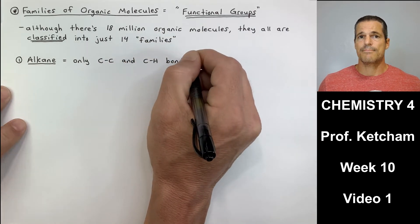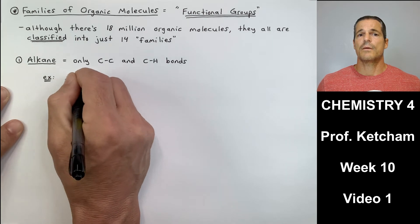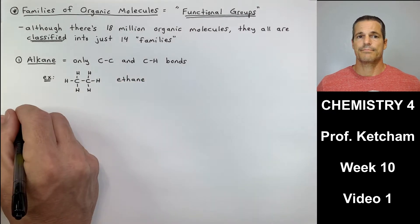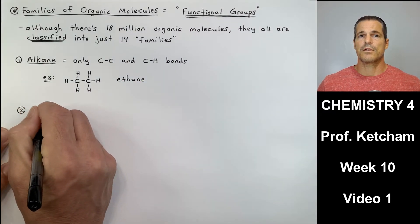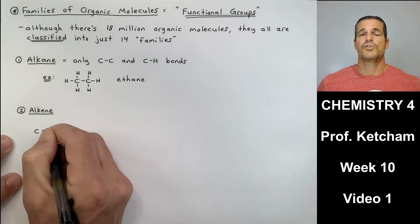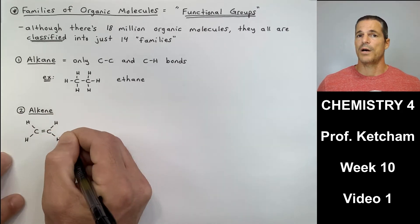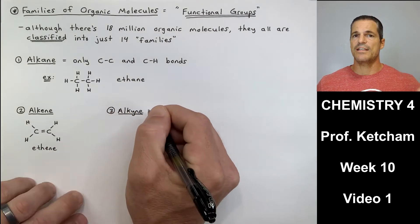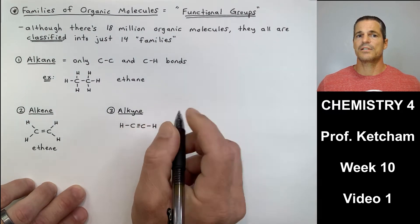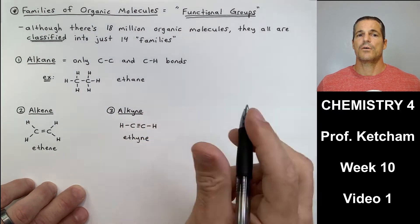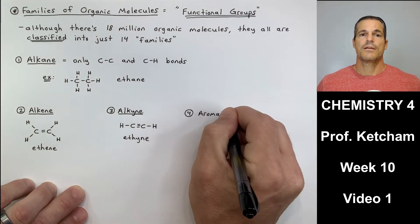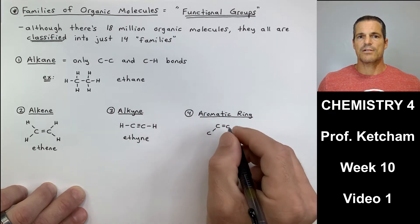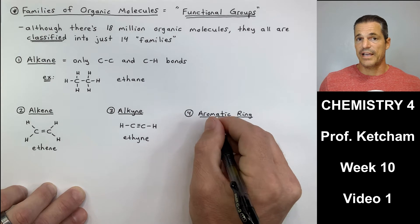The first functional group is alkane — only carbon-carbon and carbon-hydrogen single bonds, both nonpolar. Example: ethane. Number two are alkenes, which have a double-bonded carbon — example: ethene. Number three, alkyne, has triple-bonded carbons. Number four is the aromatic ring, which is alternating double and single bonds in a ring — this is a benzene ring. These first four are the focus of chapter 11, and since they contain only C and H, they're called hydrocarbons.